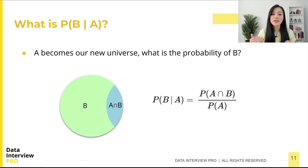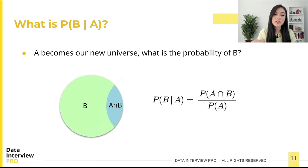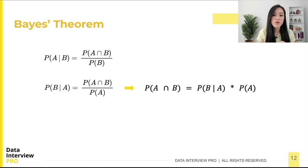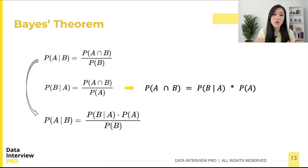Similarly, we can get the conditional probability of B given A. In this case, A becomes our new universe, and we find the probability of event B within it. It equals the probability of the intersection of A and B divided by the probability of A. Now let's organize what we've learned. We have two different conditional probabilities from the Venn diagram. The second equation tells us that P(A ∩ B) is equivalent to P(B|A) multiplied by P(A) — another way to obtain the joint probability of events A and B.